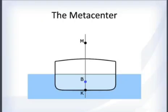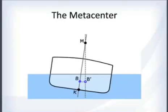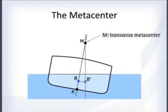Initial transverse stability also introduces the concept of the metacenter. Tip the ship over a little bit, more and more — you can see the original center of buoyancy B shifting over to B prime. It turns out that for small angles the ship's center of buoyancy follows a circular arc.